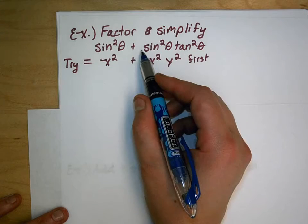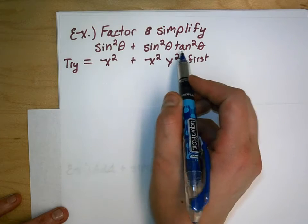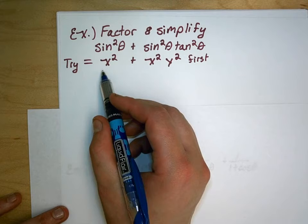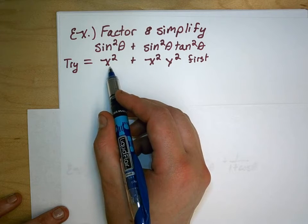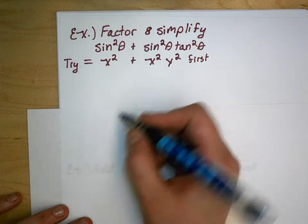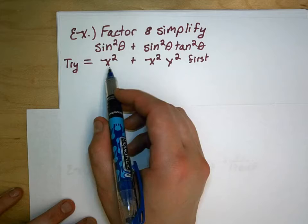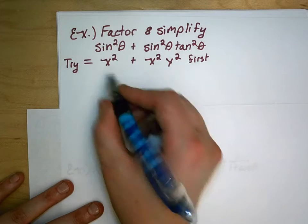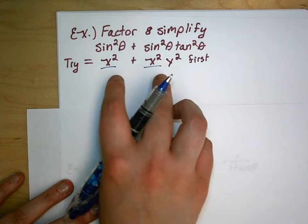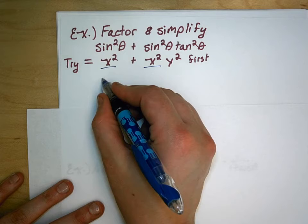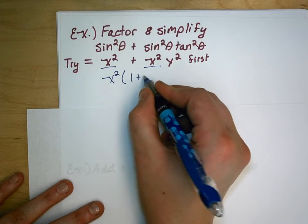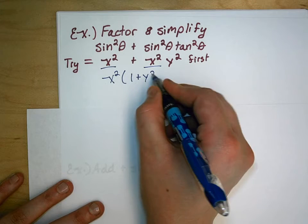Sine squared plus sine squared times tangent squared. That looks kind of messy, so let's go ahead and try x squared plus x squared y squared first. So if I factor this out, I know that I have this x squared guy in common with both, so I can factor that out and I get x squared times 1 plus y squared.